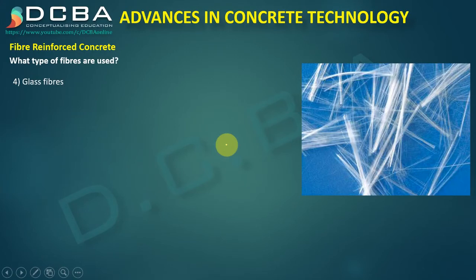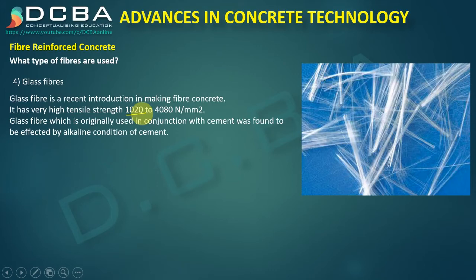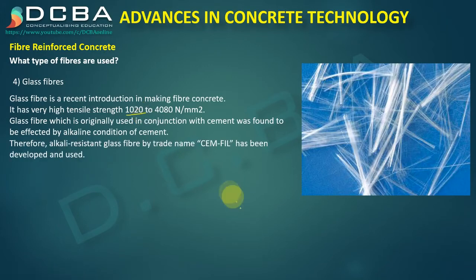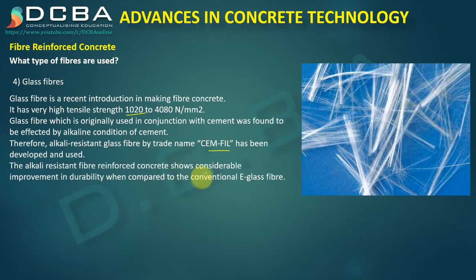Next is glass fiber, a recent introduction in making fiber concrete. It has very high tensile strength of 1020 to 4800 Newton per mm square. However, glass fiber used in conjunction with cement was found to be affected by the alkaline conditions of cement. Therefore, an alkali-resistant glass fiber by the trade name Semphil has been developed and used. The alkali-resistant fiber reinforced concrete shows considerable improvement in durability compared to the conventional E-glass fiber.